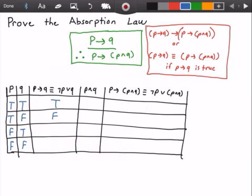And then the third row is true because Q is true, and the fourth row is also true because we have that not P. So P is false, so not P is true. So we get true or whatever Q is.